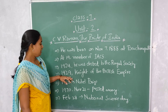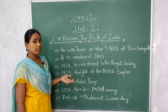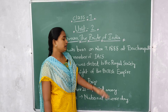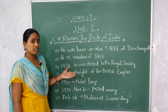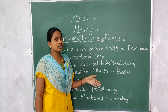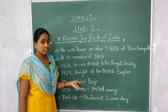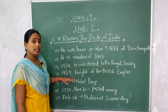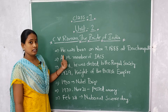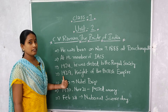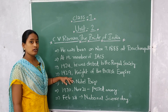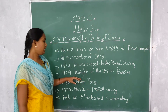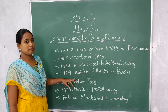In the year 1929, British people gave him the title Knight of the British Empire. In those days, British people generally used to reject the inventions and discoveries of Indians. But they happily received C.V. Raman's discovery. Knight is nothing but a high, respected person.